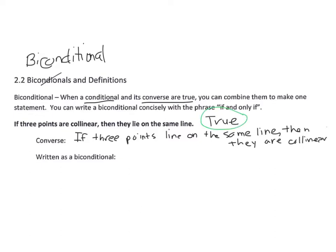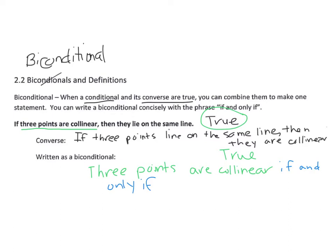Since the original conditional is true and the converse is true, we can write it as a biconditional. To do so, take the hypothesis — 'three points are collinear' — write 'if and only if' in between, then write the conclusion — 'they lie on the same line.' The biconditional captures that both the conditional and its converse are true.